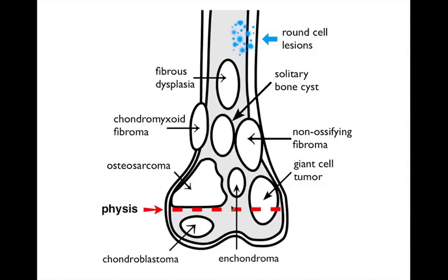Other benign bone tumors such as enchondromas and solitary bone cysts tend to be centrally located lesions occurring in the metaphysis and the diaphysis. Fibrous dysplasia tends to be a diaphyseal-located, centrally located lesion. Things that are commonly eccentrically located include non-ossifying fibromas — you can even say this is a slightly cortically-based lesion. These are classically eccentrically or cortically based lesions, non-ossifying fibromas.